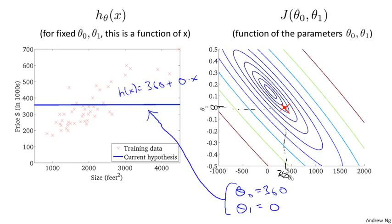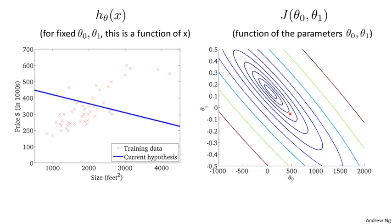Here's one more example. At this value of theta 0 and that value of theta 1, we end up with this hypothesis h of x. Again, not a great fit to the data, and we actually move even further out from the minimum.